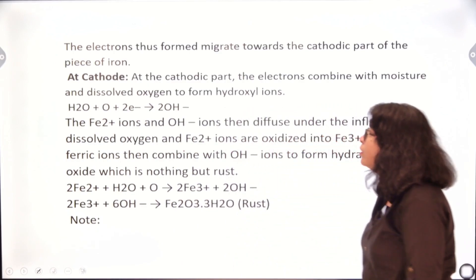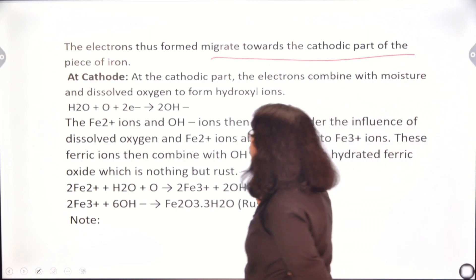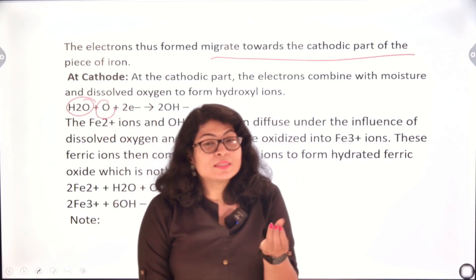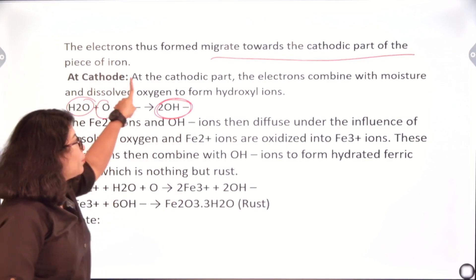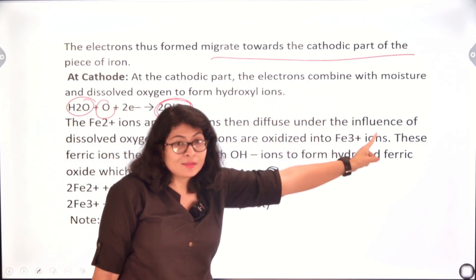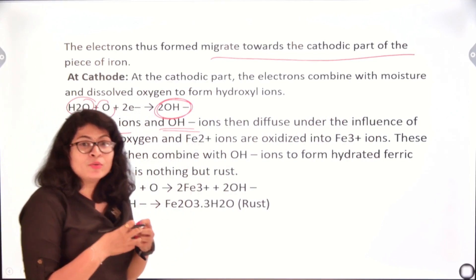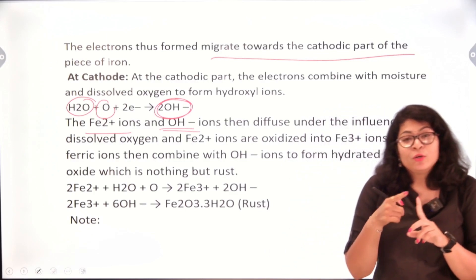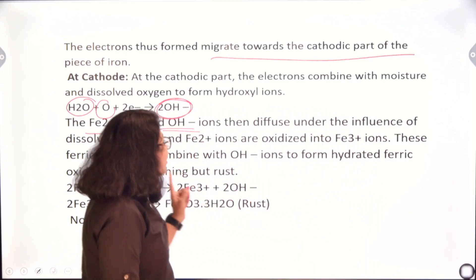At the cathode, the electrons thus formed migrate towards the cathodic part of the piece of iron. There, water along with oxygen gains those electrons to form hydroxide ions (OH⁻). At the cathodic part, electrons combine with moisture and dissolved oxygen to form hydroxide ions. The Fe²⁺ ions and OH⁻ ions then combine together; under the influence of oxygen they diffuse and the ferrous ions (Fe²⁺) get converted to ferric ions (Fe³⁺).